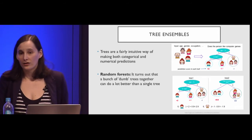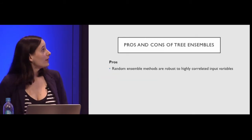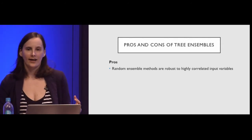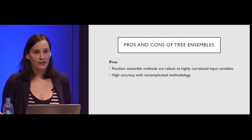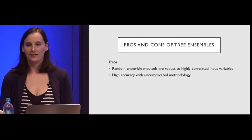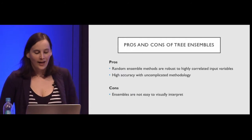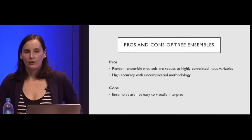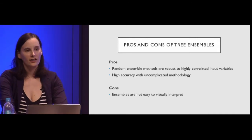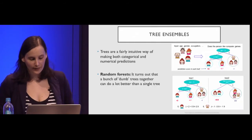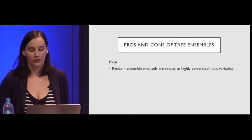Tree ensembles are fairly computationally simple, except that you have to have so many of them, and that's the computational downside. Pros: random ensembles are very robust, especially to problematic data where things are related to each other. They have high accuracy with an uncomplicated methodology — decision trees are intuitive and we can understand why they do what they do. The cons: they're not easy to visually interpret. With an ensemble of a hundred or a thousand trees, each with its own logic, you can't really audit it or get a gut feeling about whether it's good.